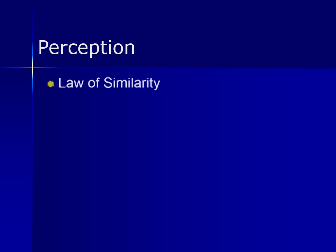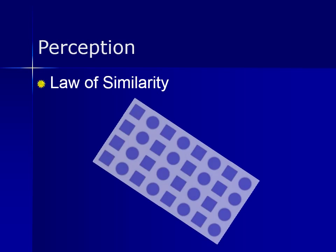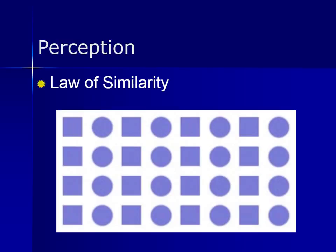In the law of similarity, items that are similar tend to be grouped together. When you look at this image, you would most likely see vertical lines of squares and vertical lines of circles, as a way to organize what you are seeing and make more sense out of it.